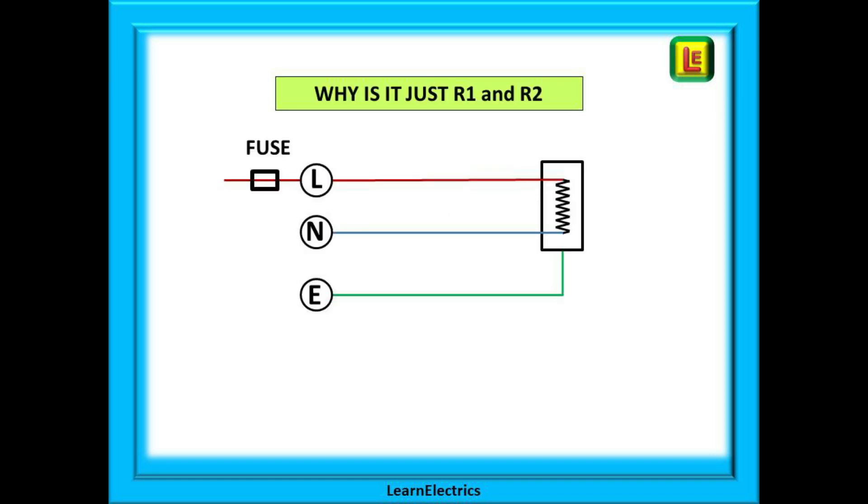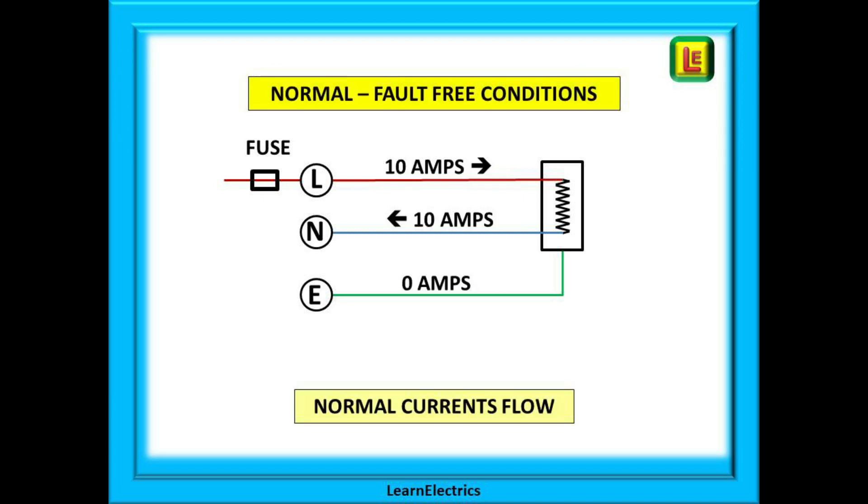But wait, you say, why is it just R1 and R2? Well let's go over the conductor names again and follow what happens in no fault conditions and also during a fault. Firstly, no fault conditions. We've kept the drawing simple and uncomplicated. We have a water heater circuit and when switched on it draws 10 amps. The energized electricity flows through the fuse and along the phase wire marked L.